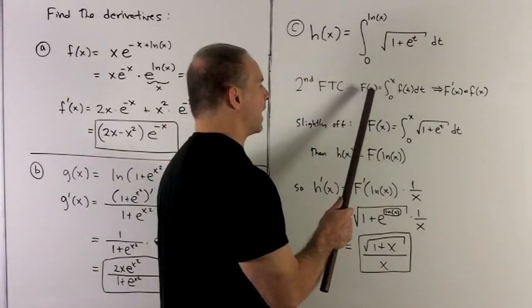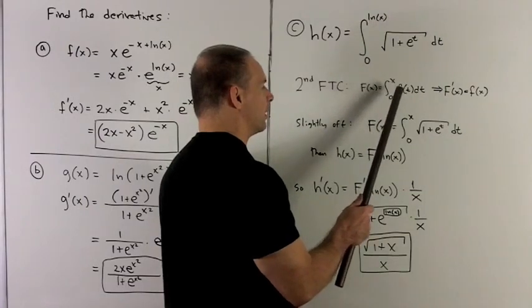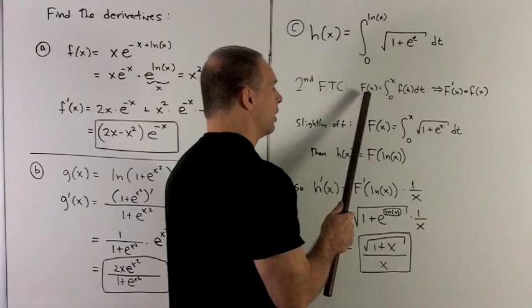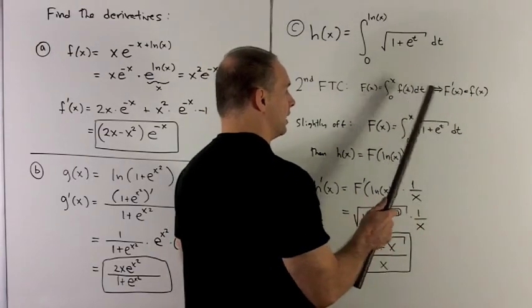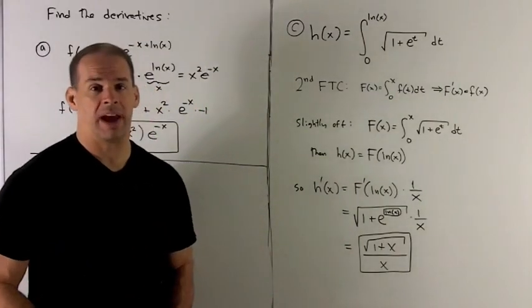So let's recap what second fundamental theorem of calculus says. It says if I call big F of x equal to definite integral from 0 to x of f(t) dt, if I take the derivative of big F of x, it's just the same as saying take your f and replace the t with an x. So this is a really useful theorem to have around.